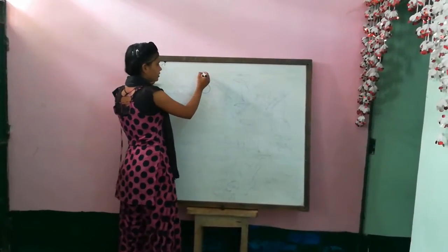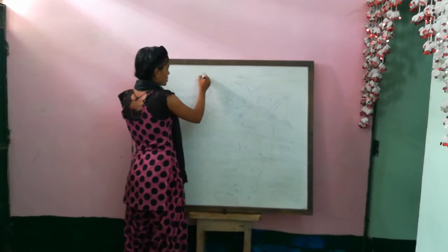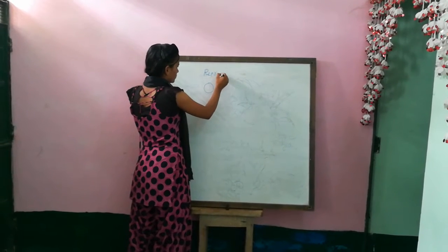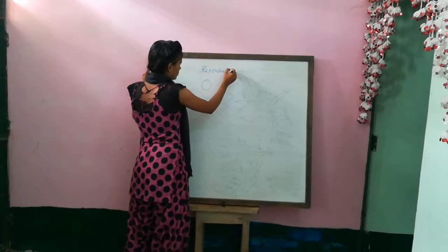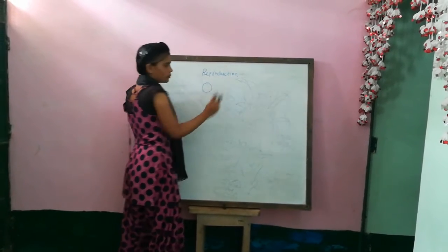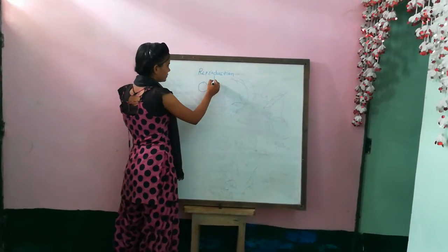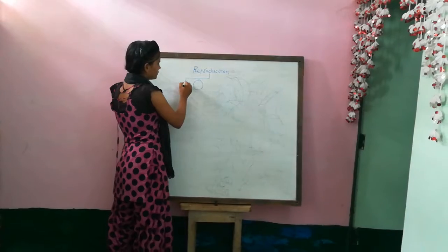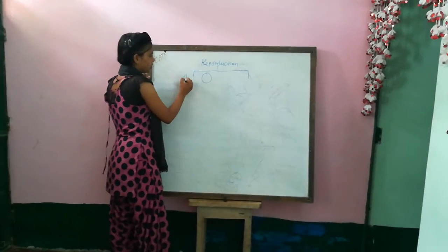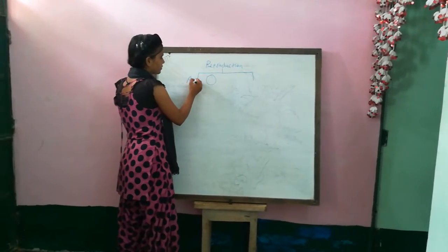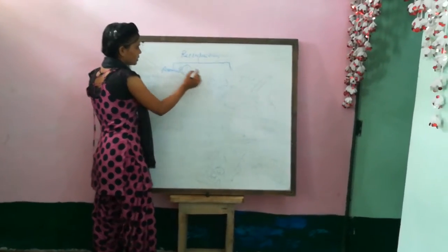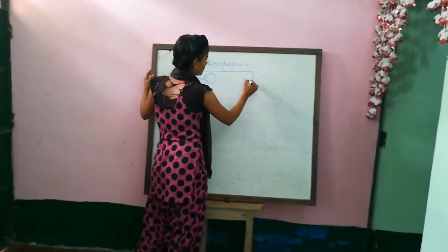Reproduction is of two types: first, Asexual Reproduction, and second, Sexual Reproduction.